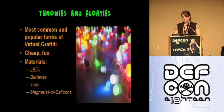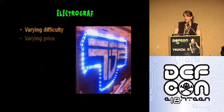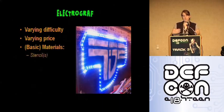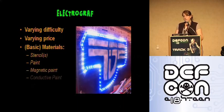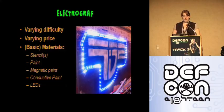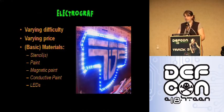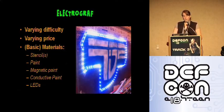Next, we have the Electrograph. It can be as easy or as difficult as you want to make it and likewise can be as inexpensive or expensive as you wish. The base materials are pretty simple: conductive paint, magnetic paint, regular and/or spray paints, stencils in case you're not comfortable free-handing, LEDs and batteries. From there you can add various components like microprocessors or photoresistors so that the LEDs only come on during night, or even a proximity sensor so that it lights up or does something based on how close someone is to the art.